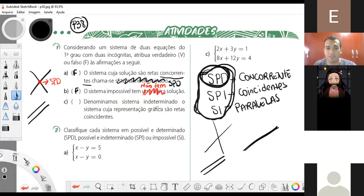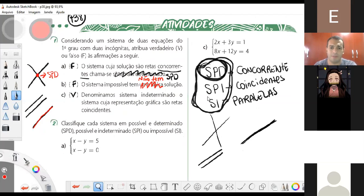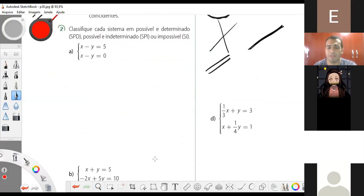Denominamos sistema indeterminado o sistema cuja representação gráfica são retas coincidentes. Verdadeiro. Retas coincidentes é quando uma reta está em cima da outra. Ou seja, as equações têm o mesmo valor. Então, seria uma reta em cima da outra reta. Então, são retas coincidentes. Então, é sistema indeterminado.